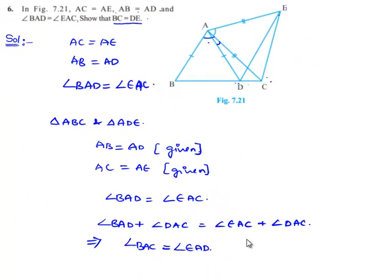Now, according to SAS property, we can say that triangle ABC is congruent to triangle ADE.